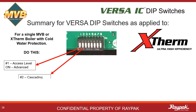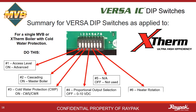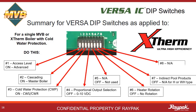If you are setting up a single MVB or Xtherm boiler with a cold water protection system, set Versa Dipswitch numbers one, two, and three on, with all others off. Be careful when adjusting the Dipswitches — that soft plastic tab can shear off easily. Use the tip of a ballpoint pen, or better yet, a Dipswitch tool. If you are using a screwdriver, you might shear off that little tab.